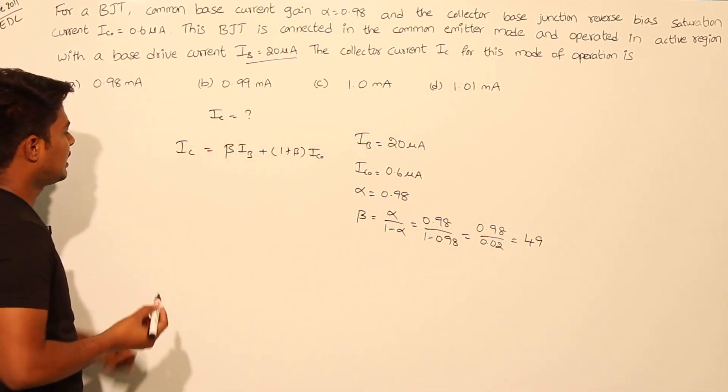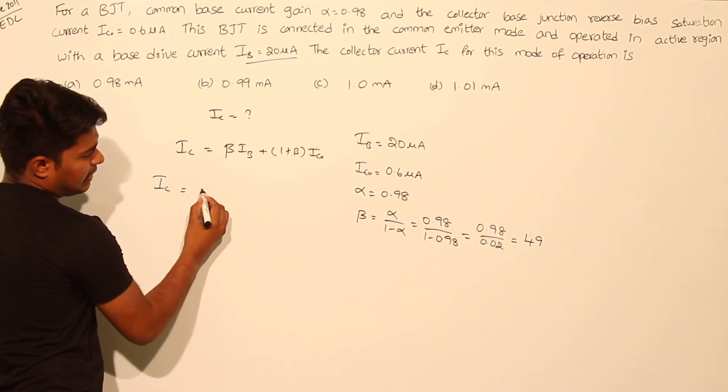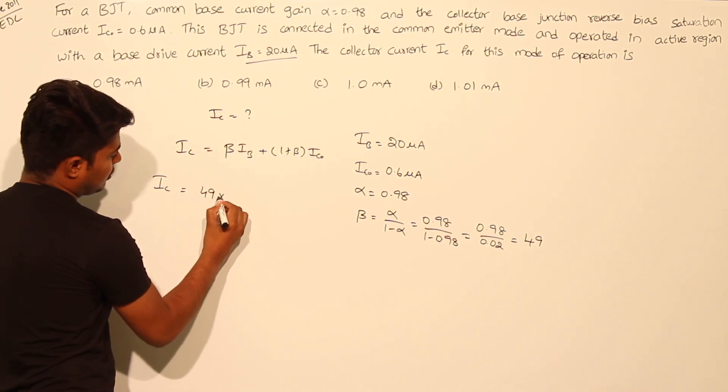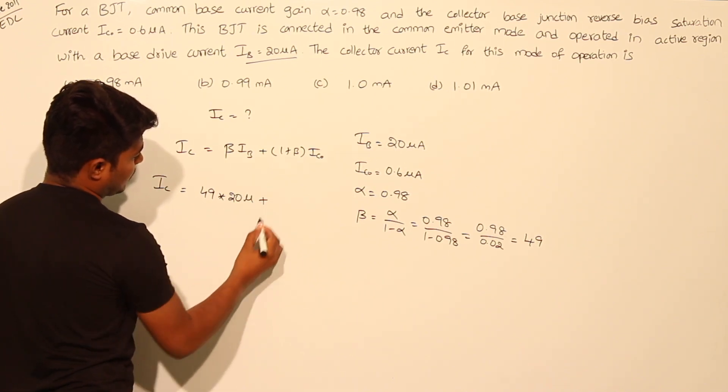Now substitute these values in this equation. We will get the collector current IC equals beta 49 into IB 20 micro plus (1 plus 49) into IC not 0.6 micro.